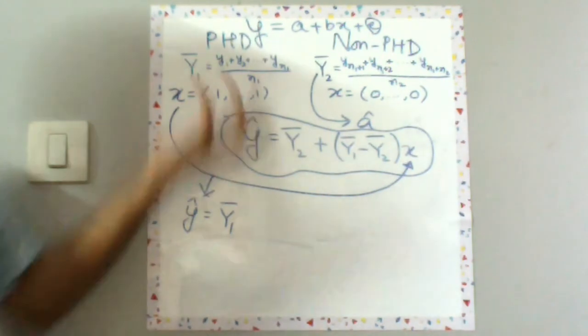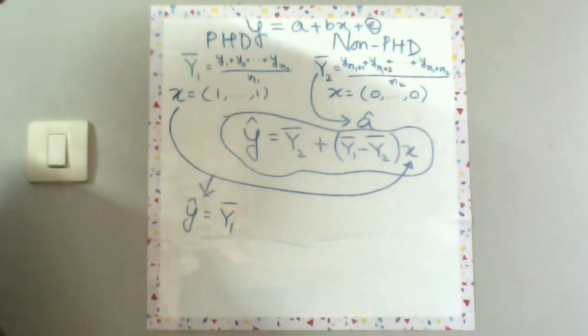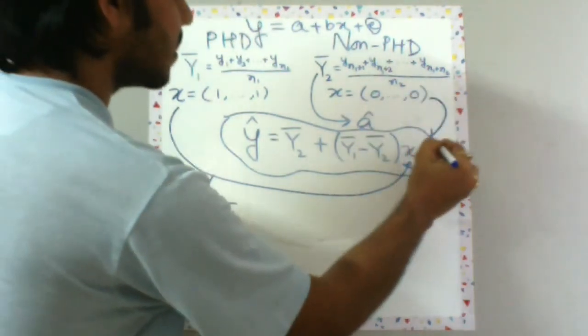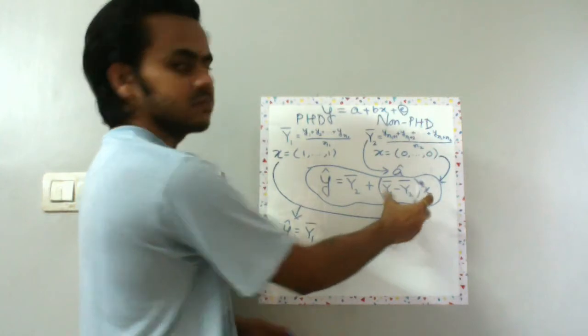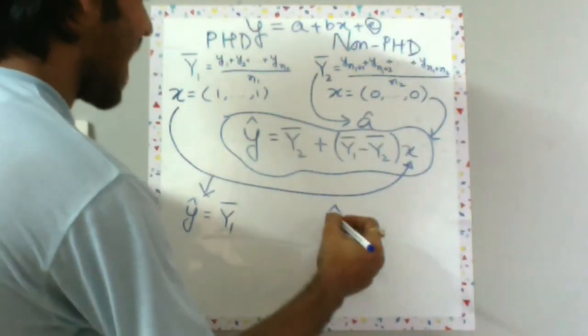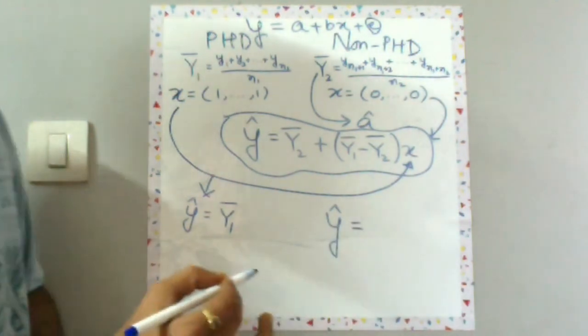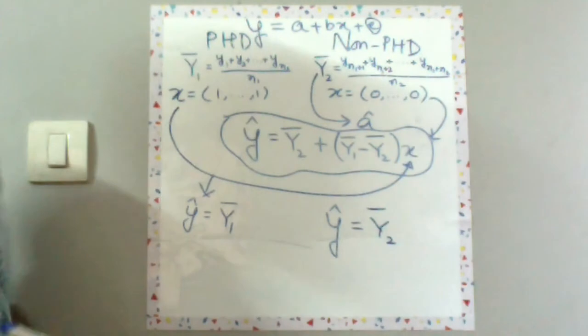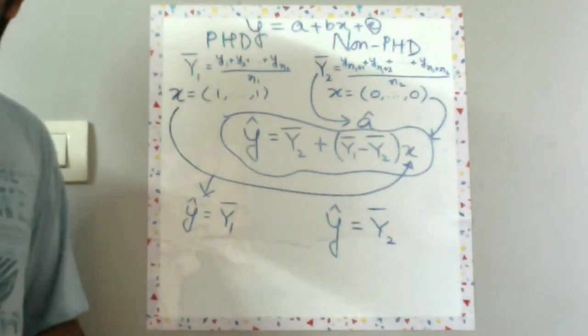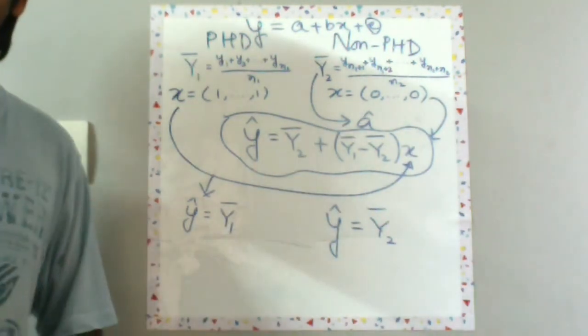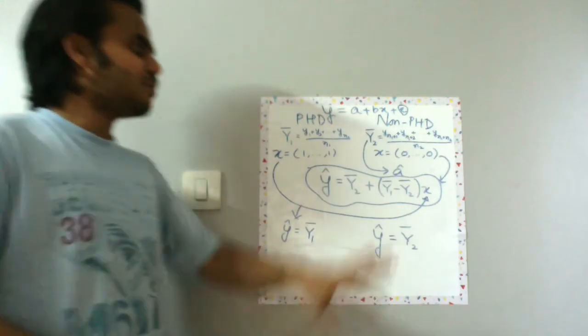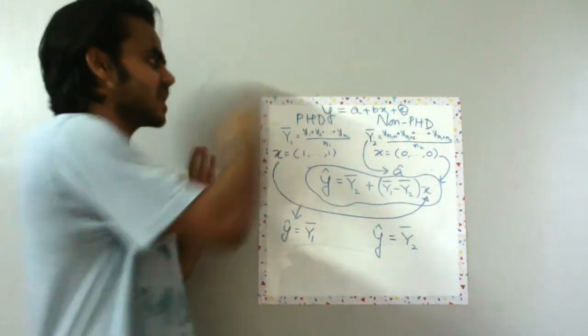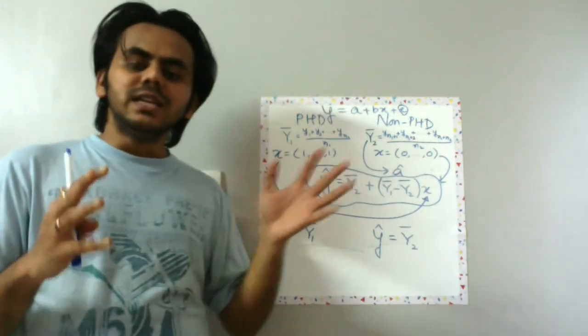Which is kind of obvious. The expected salary of PhD graduates should be the average salary of PhD graduates. Now what about the non-PhD guys? Let's plug in zero here. If you plug in zero, this thing goes, so your y hat of non-PhD graduates is simply Y2 bar, capital Y2 bar, which is the average salary of the non-PhD graduates, which is also quite obvious.